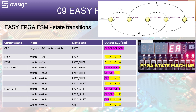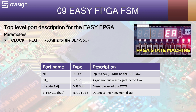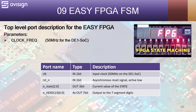Let's analyze the top-level port description for the easyFPGA module. We are going to use a parameter called ClockFreq with a default value of 50 MHz, because that is the clock on the DE1 SoC development board. Our module has a clock port (1-bit input), a resetN port for asynchronous reset, a 3-bit output port called O_state displayed on the LEDs representing the current state, and four 7-bit outputs (HEX0, HEX1, HEX2, HEX3) connected to the seven-segment displays.